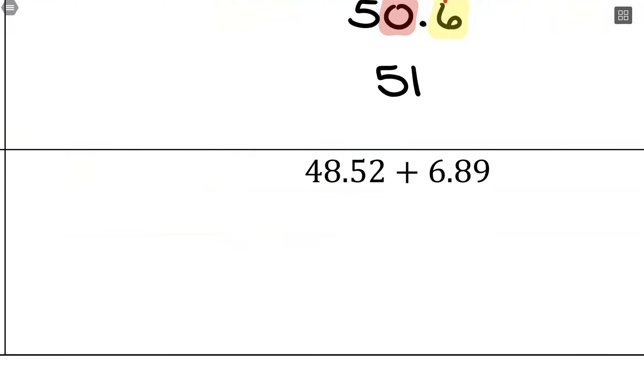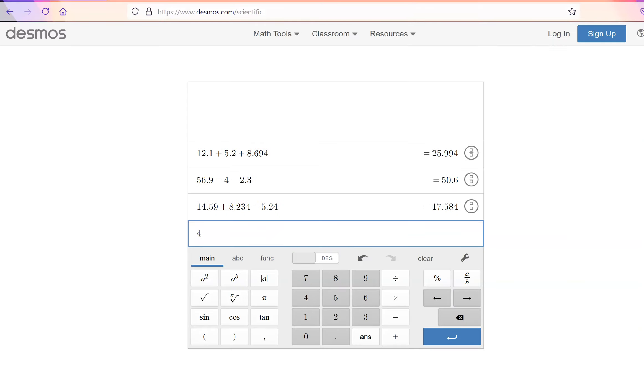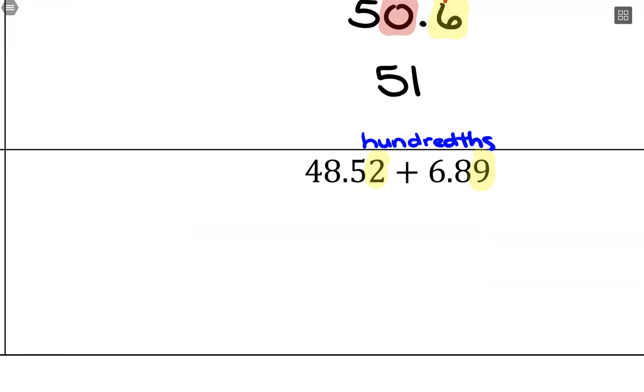Our last one here. We have hundredths and hundredths, so our least precise is hundredths. Go to the calculator and get 48.52 plus 6.89, which is 55.41 exactly. Since that comes out exactly to the hundredths place, we don't have any rounding to do. That would just be our solution.